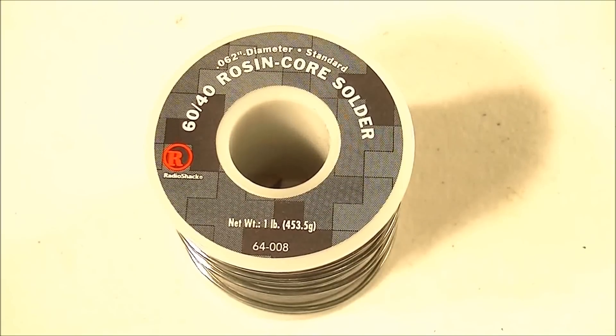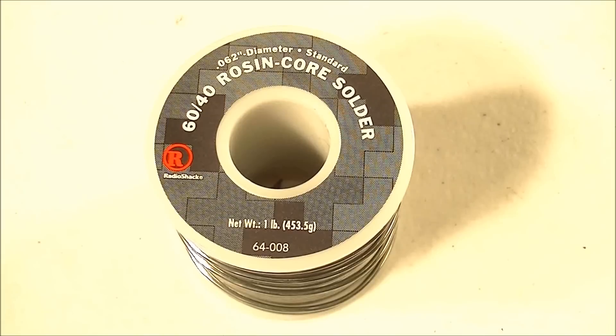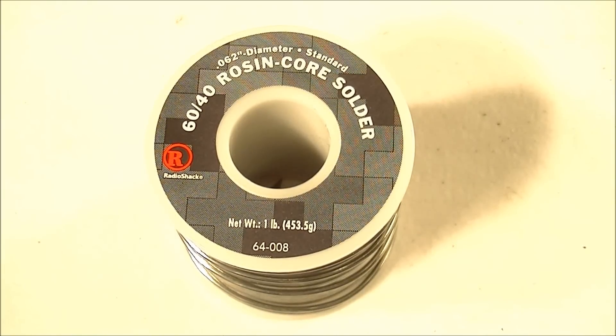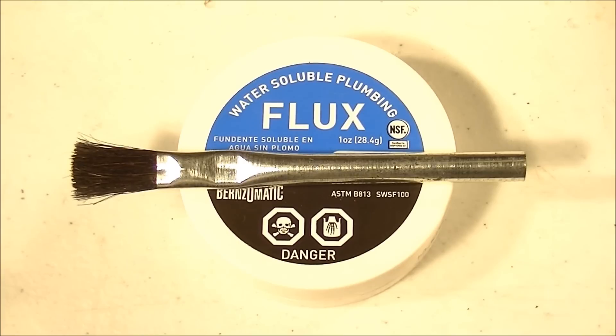To simplify this process I recommend using rosin core solder. It is a tubular or hollow form of solder. The inner space of the solder is filled with a non-corrosive rosin flux, sort of like the lead in a pencil. That way there is no need to externally brush on any flux.